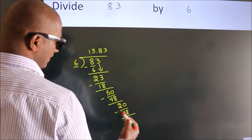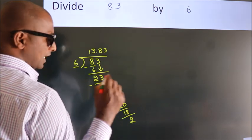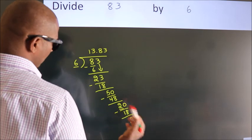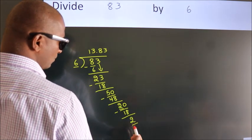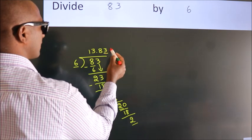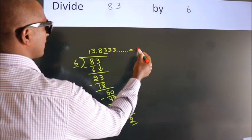Now, we subtract. We get 2. Now, you observe. We had 2 here, and we got 2 again. That means this number keeps on repeating. So, this is our quotient.